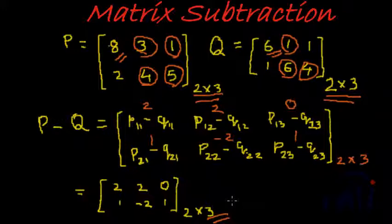Similar to addition, if the order of the two matrices—the number of rows and number of columns—are not the same, then P minus Q is not defined. So that's all there is to matrix subtraction. Very similar to addition, only the operation changes. The rule remains the same, the way you group the elements remains the same.